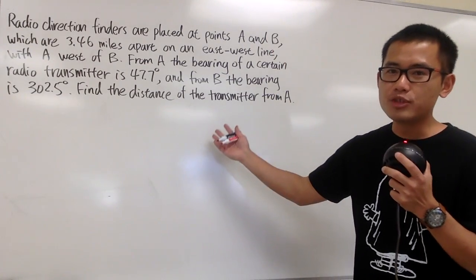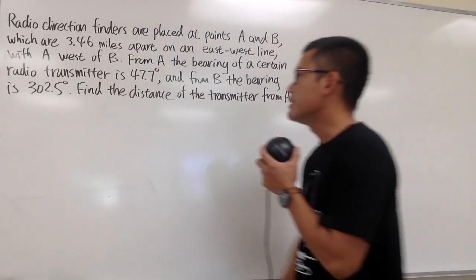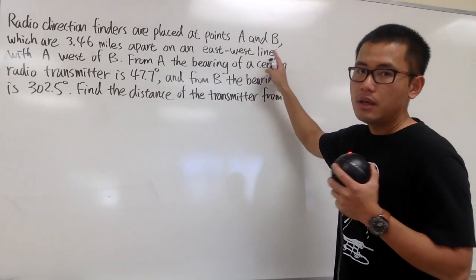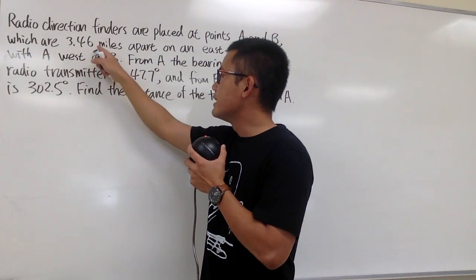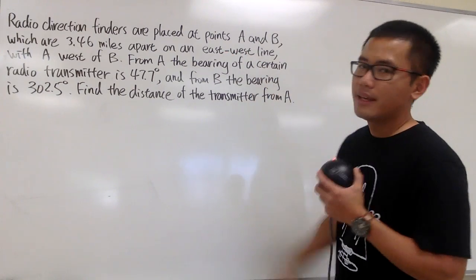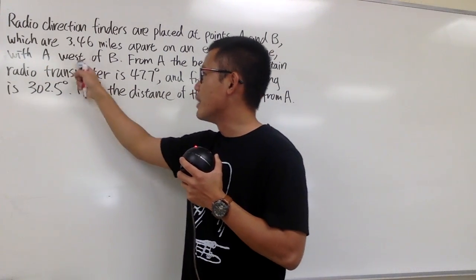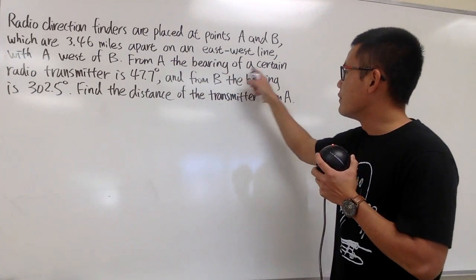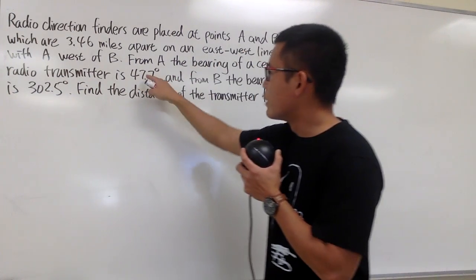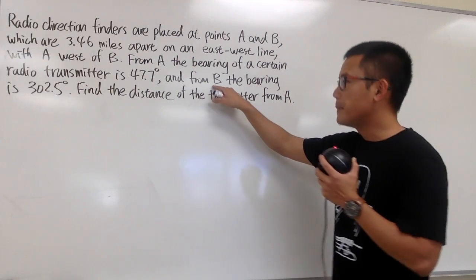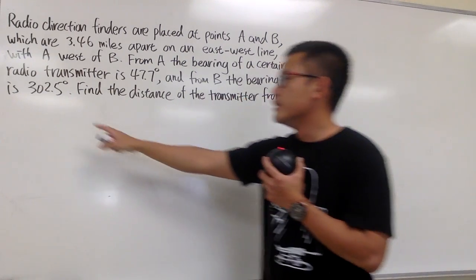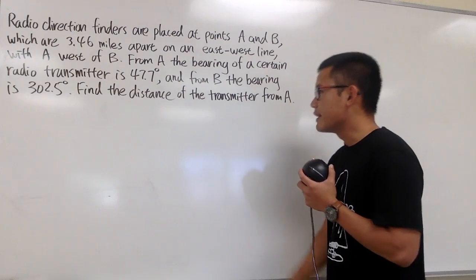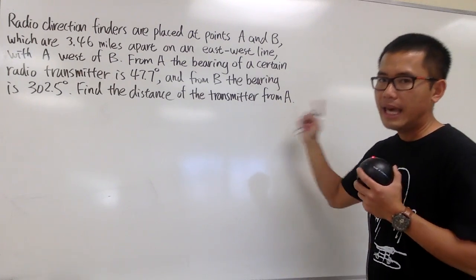Let me show you how to solve this application problem that involves a bearing. It says radial direction finders are placed at points A and B, which are 3.46 miles apart on an east-west line, and A is west of B. From A, the bearing of a certain radial transmitter is 47.7 degrees, and from B, the bearing is 302.5 degrees. We are going to find the distance of the transmitter from A.